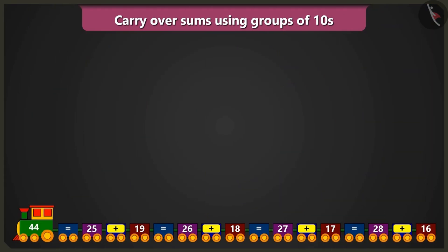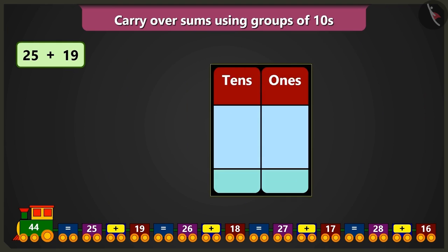In this train, first of all, 25 and 19 have been added. So now, we will place these numbers in the box of tens and ones and add them. Adding 5 ones and 9 ones will result in 14. Out of 14, we will place 4 in the ones place and carryover 1 in the tens place.